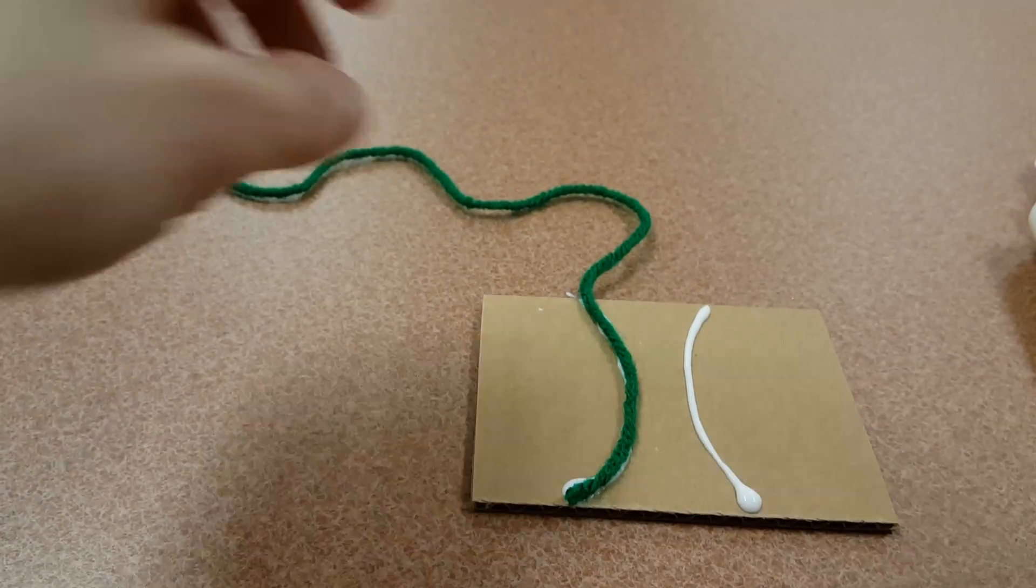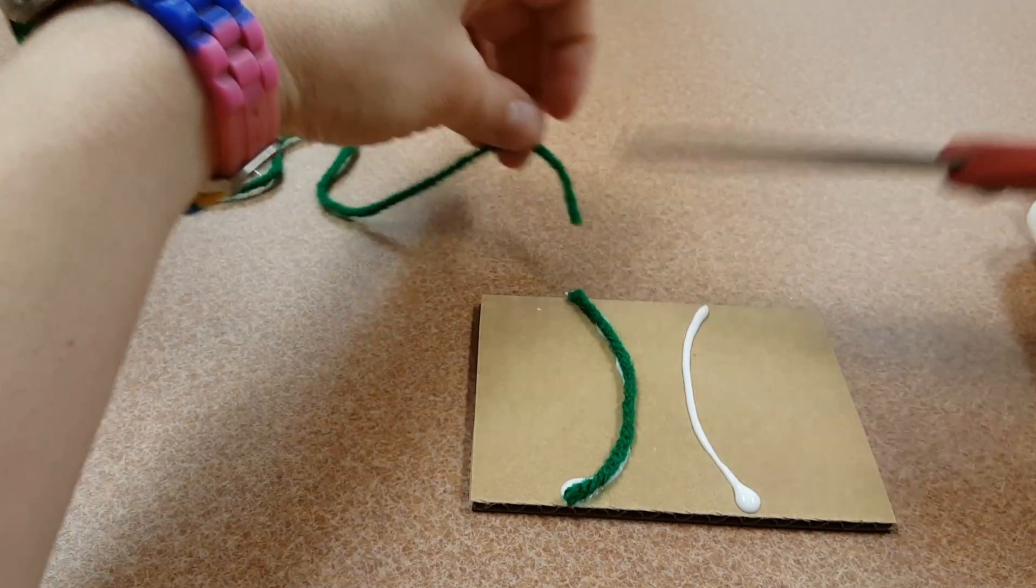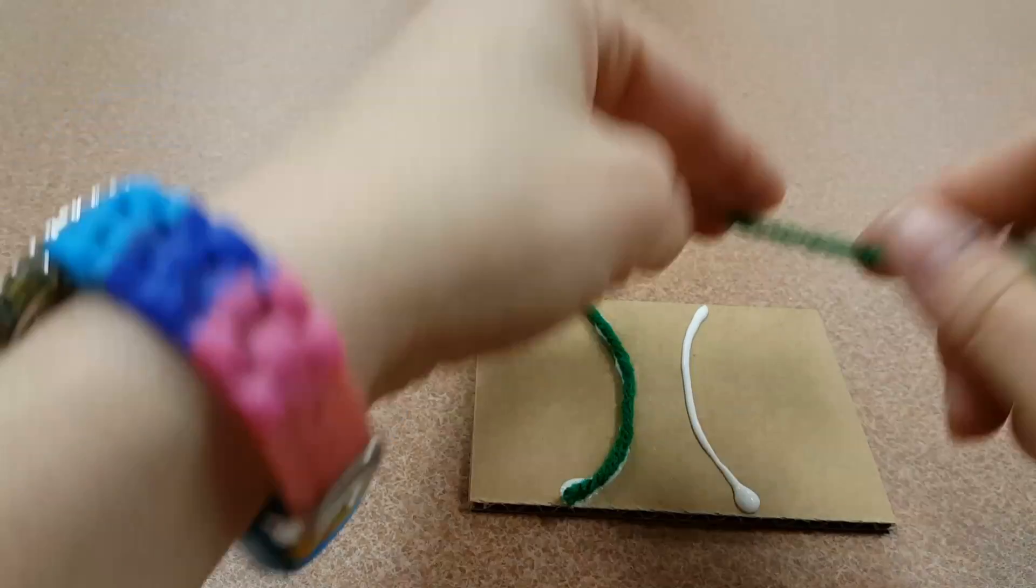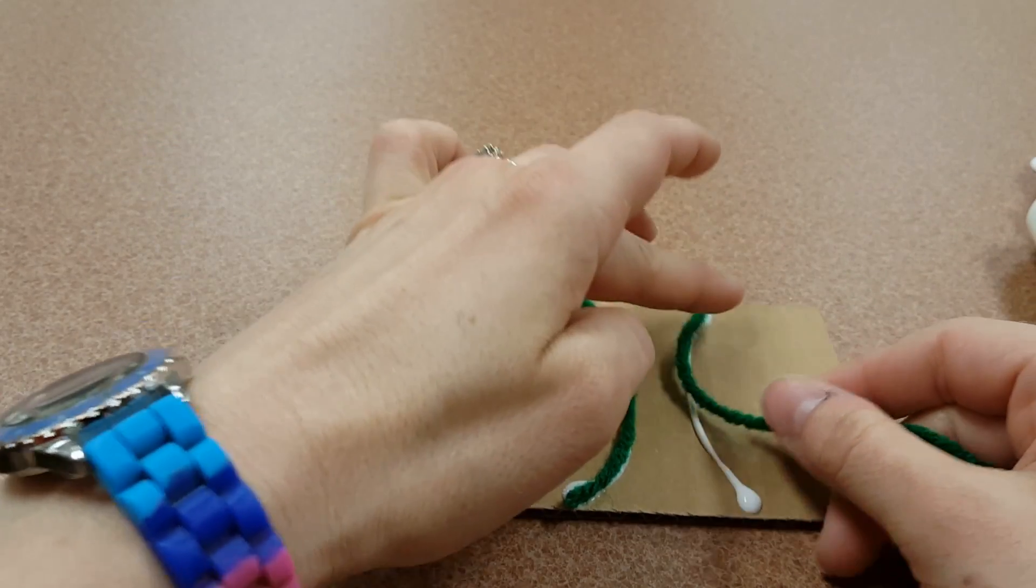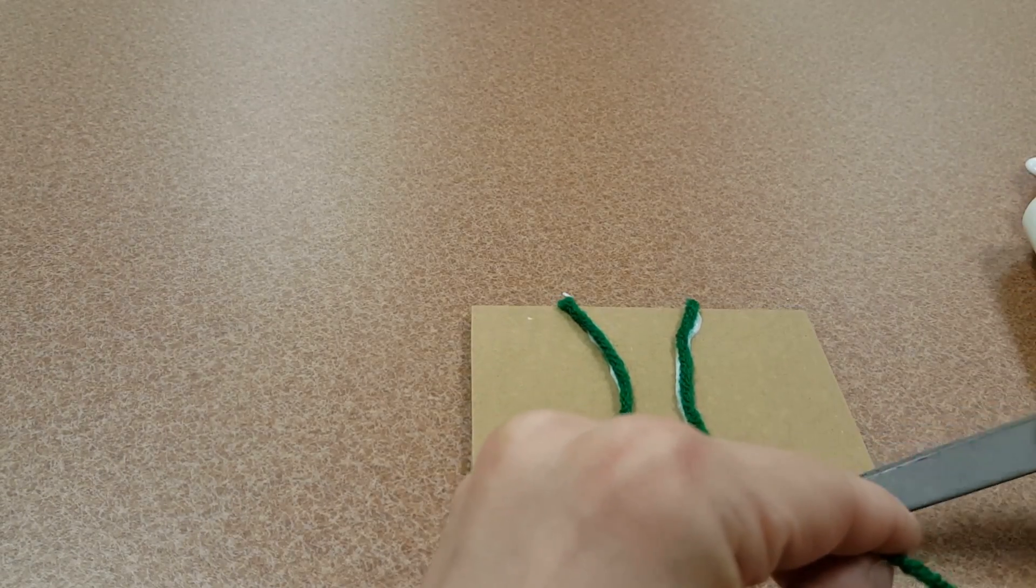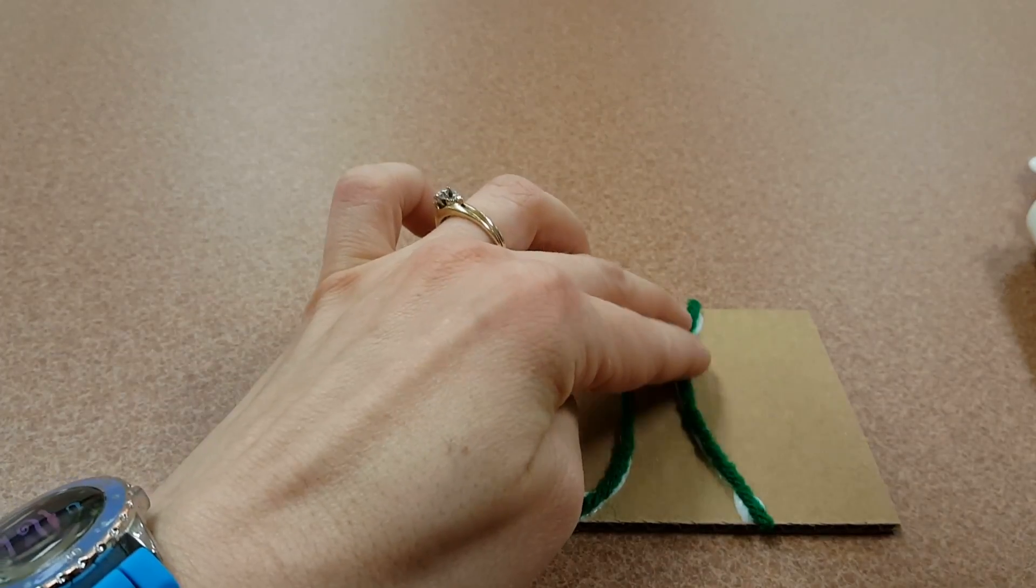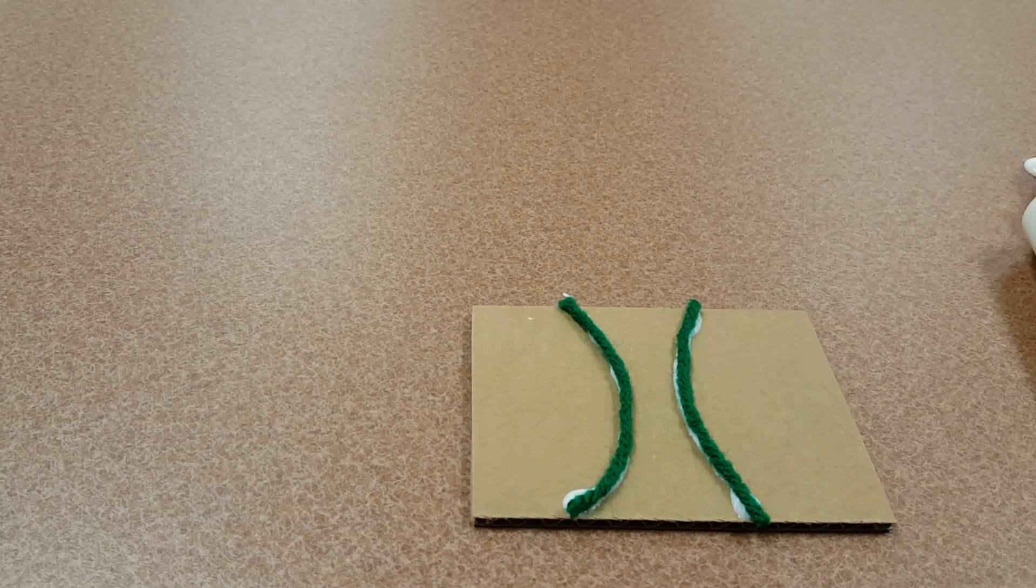The extras we can just cut off and then repeat for every line you have. Put a line down, cut the extra. It's okay if it hangs off the edge a little bit.